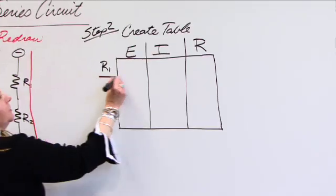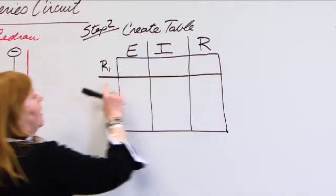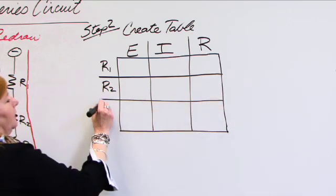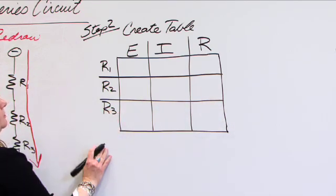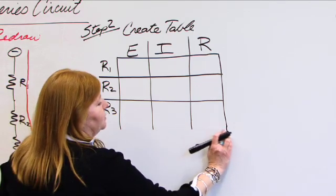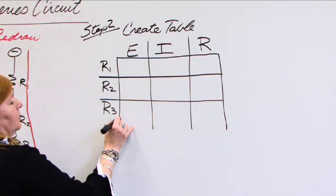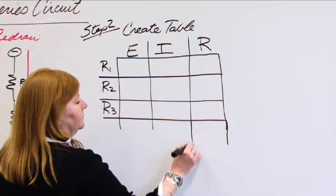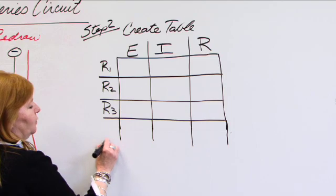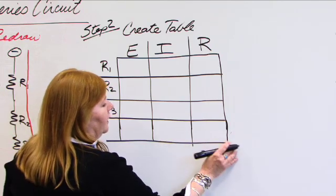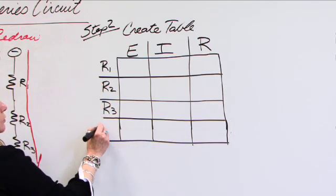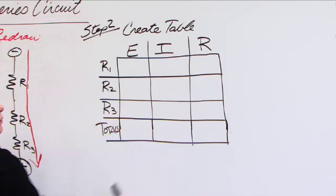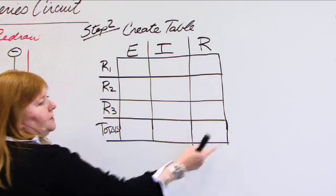We want to track the voltage current and resistance over R1. We want to do the same over R2. We want to do exactly the same over R3. And I'm going to adjust this a little bit because one other thing that we need to track is total. So, I'm just extending this down. Because I also want to keep track in my circuit of the circuit totals. And that means, what's the total voltage? What's the total current? What's the total resistance in this network?